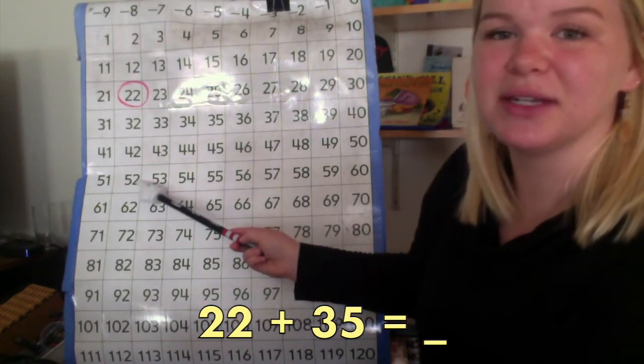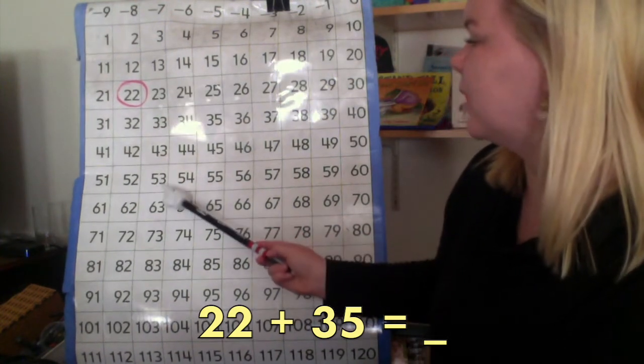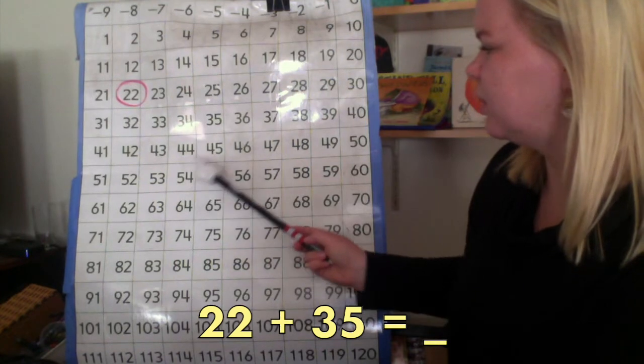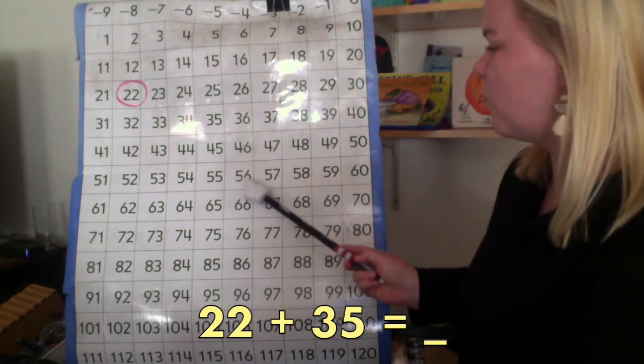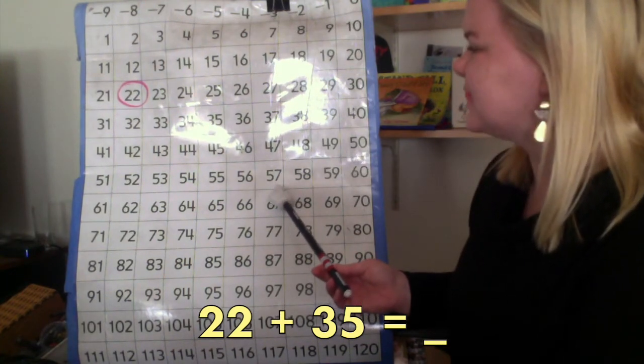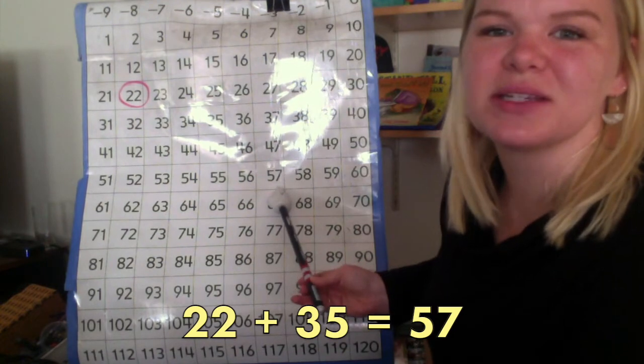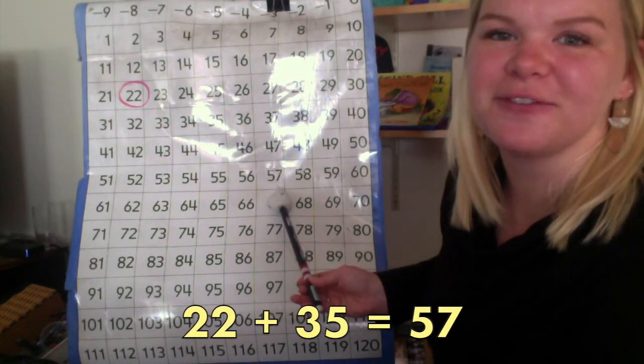So, we counted up 30. We just need 5 more. 1, 2, 3, 4, 5. So, I landed on 57. 22 plus 35 equals 57.